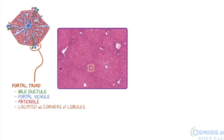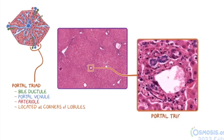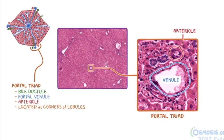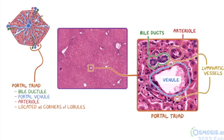If we take a closer look at just one portal triad, we can more easily identify the portal venule by its large diameter and thin walls compared to the arteriole, which has a much smaller diameter and thicker walls. The portal tract can sometimes have more than one bile duct. The bile ducts can be identified by their prominent simple cuboidal epithelium. Also in this image are a couple of small lymphatic vessels, which have even thinner walls than the venule.